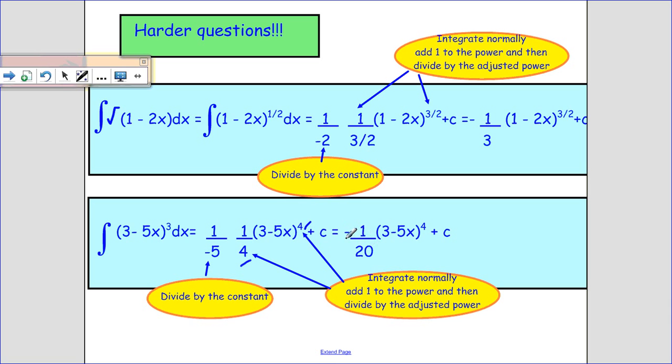And then I multiply this out. The minus I can just take to the top. So 5 times 4 is 20. And I get minus 1 over 20 times 3 minus 5x all to the power of 4 plus c. OK, I hope that's helpful.